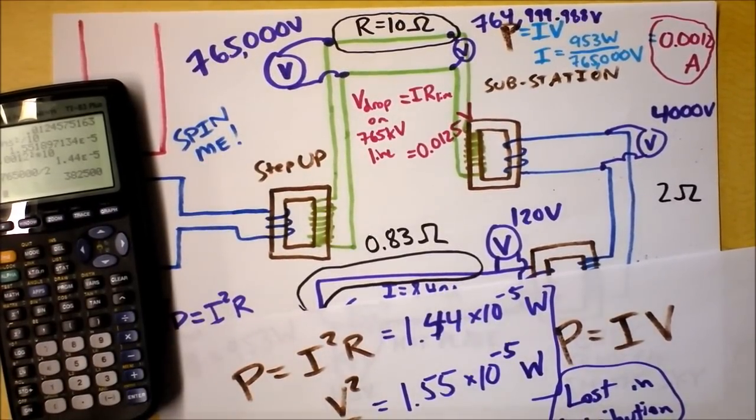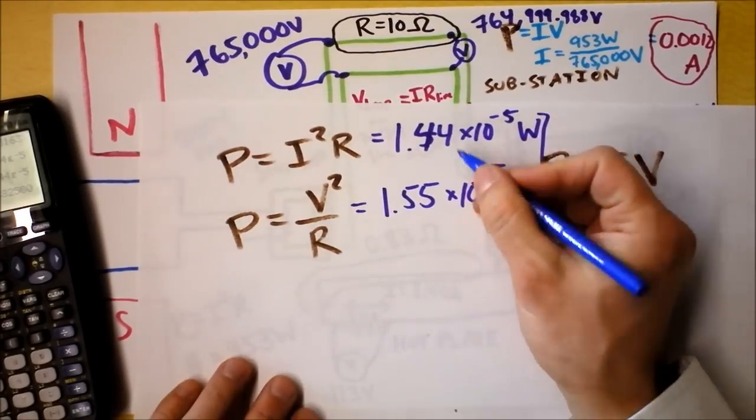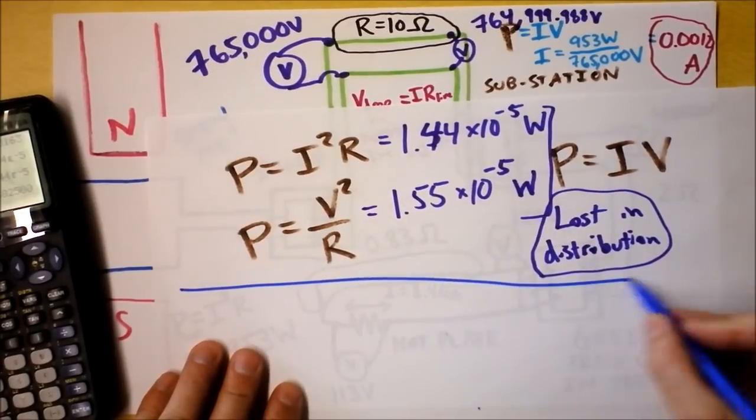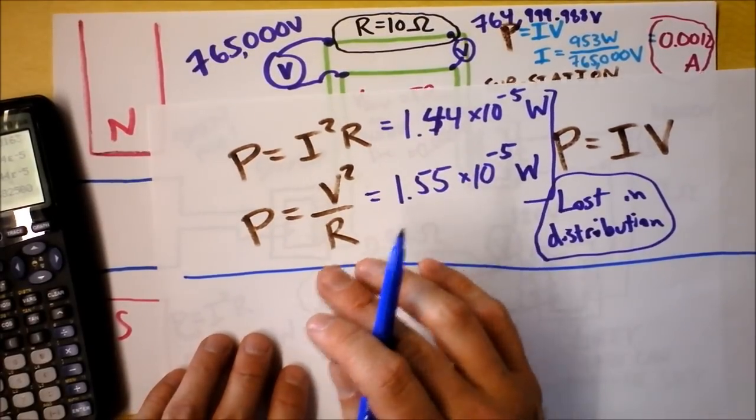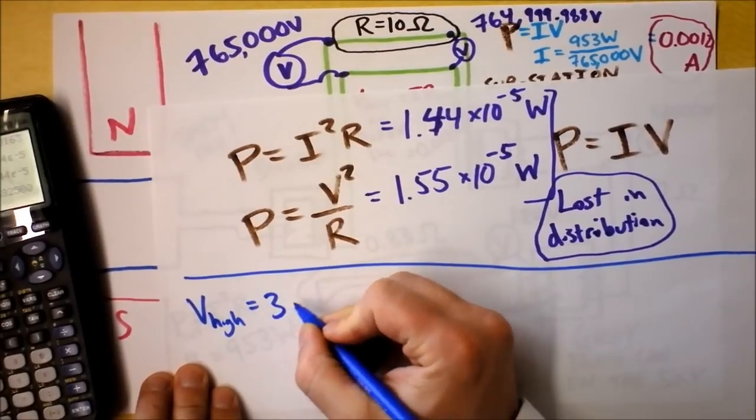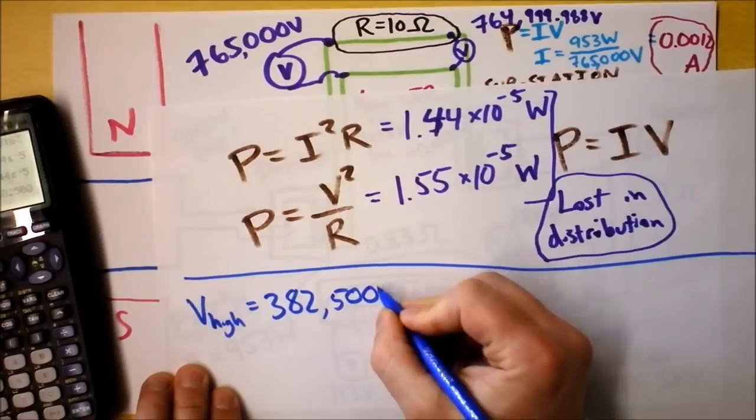My point is this: if we take this power right here, I'm guessing that we'll get even more power lost if we distribute at 382,500 volts.